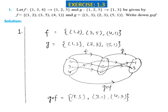Now moving to the exercise. Open exercise 1.3. Question 1: let f from {1, 3, 4} to {1, 2, 5} and g from {1, 2, 5} to {1, 3} be given by f = {(1,2), (3,5), (4,1)} and g = {(1,3), (2,3), (5,1)}. We have to write down gof.